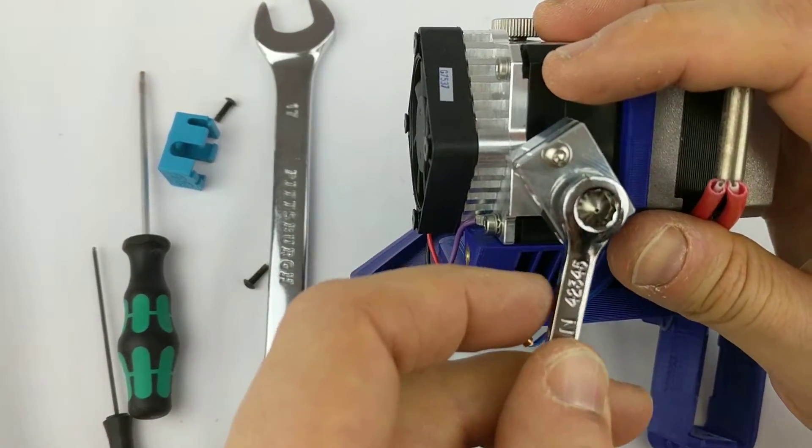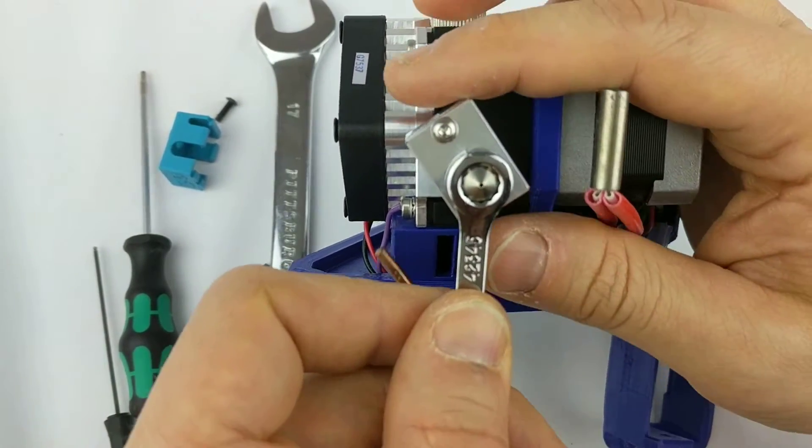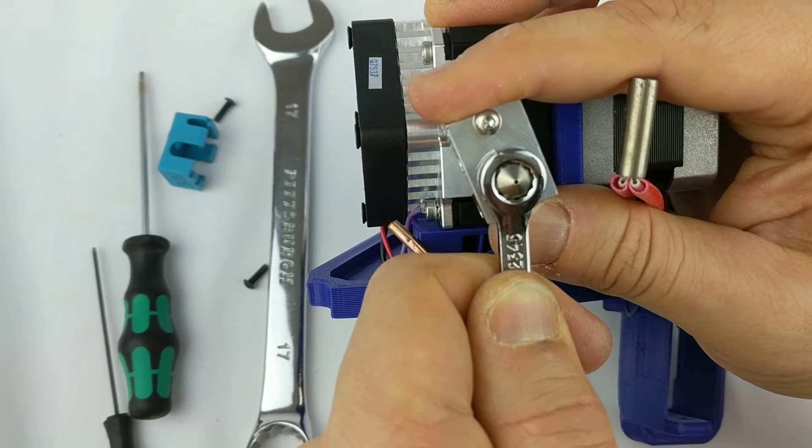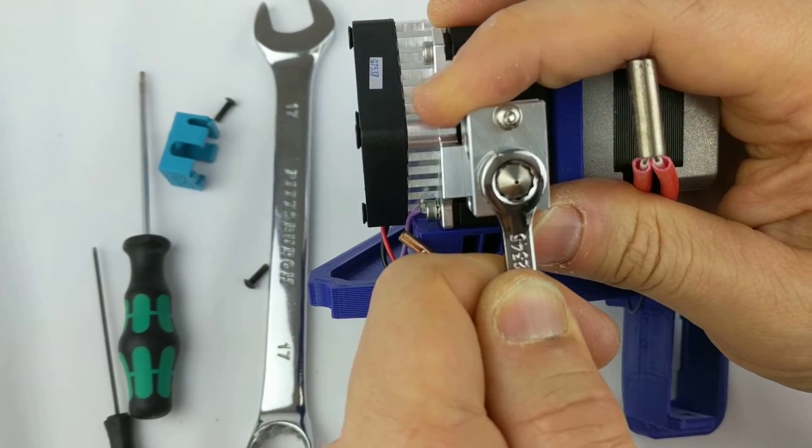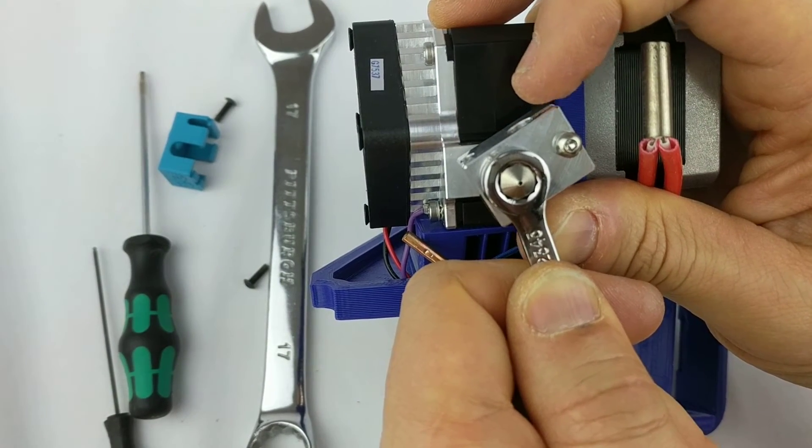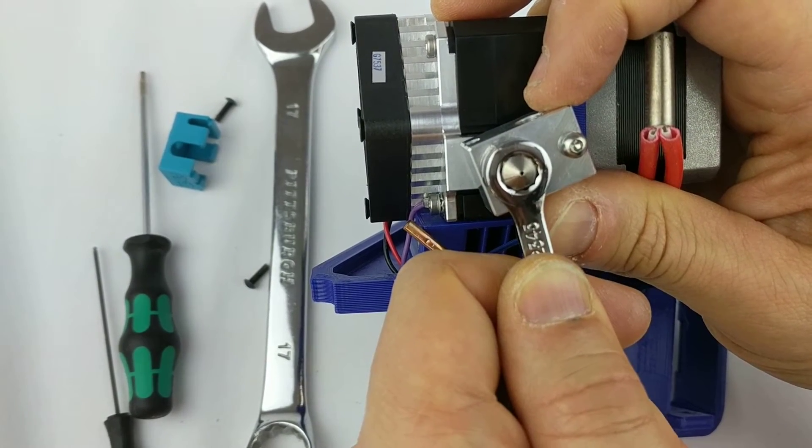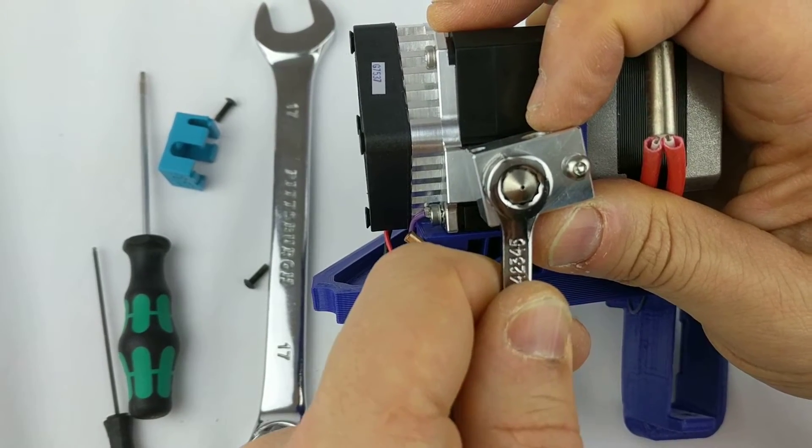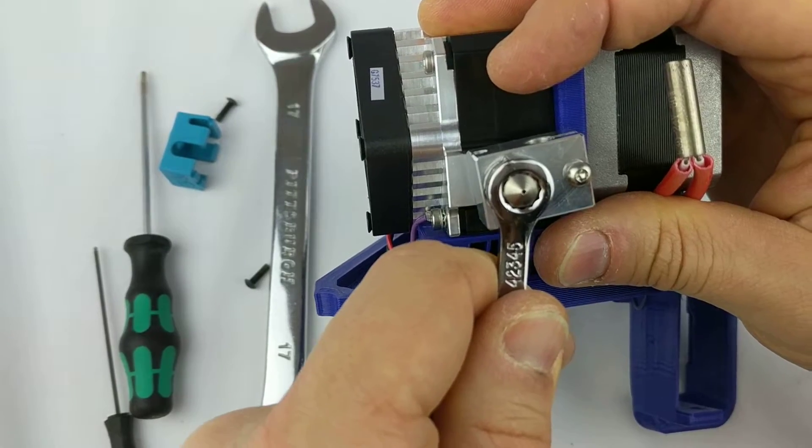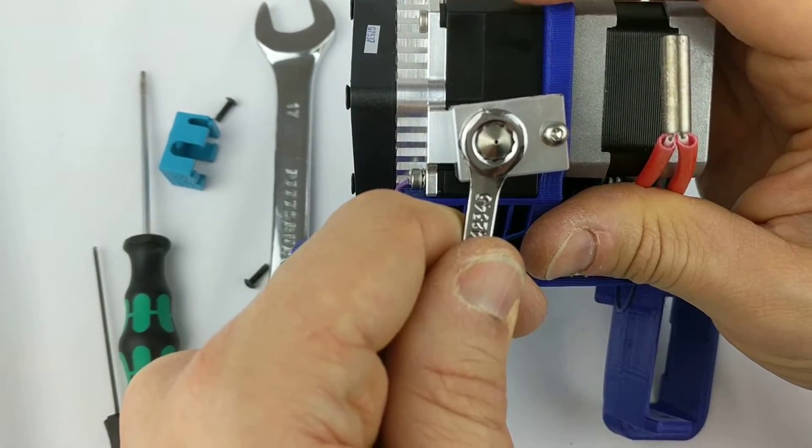And the way you do it is just gently turning, loosening the nozzle as I'm turning the heater block. And I need it to finish about a 32nd of a turn. I just need it to be snug here. About a 32nd of a turn from perfectly square.